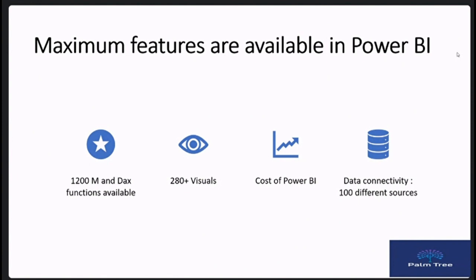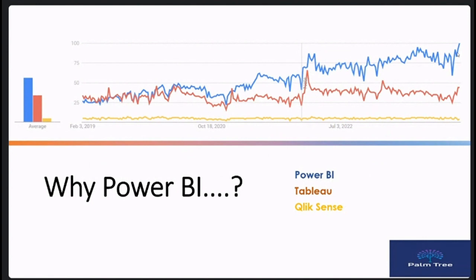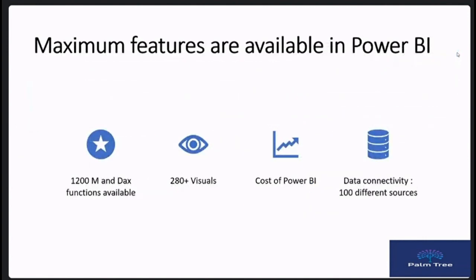Power BI has over 1,200 functions — similar to Excel functions — for custom calculations. There are 280-plus visuals you can use depending on your data and client requirements. It is cost-effective: Tableau costs around $20–$30, whereas Power BI is less than $10. A major advantage is data connectivity — Power BI supports 100-plus formats and data sources, including SQL, Azure Cloud, websites, and various file types.